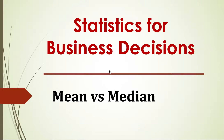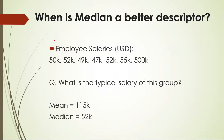Now that we know about mean, median and mode, let's discuss which of these measures can be more useful in different circumstances. So when is a median a better descriptor? Mean seems to be the most natural descriptor — if we have a bunch of data, we try to find the average. But in certain situations, median is much more useful.